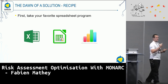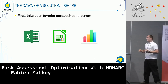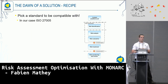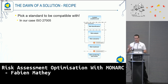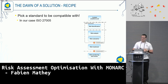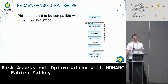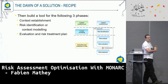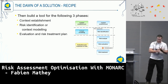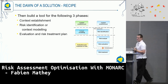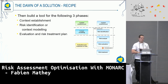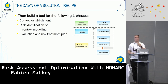Every respectable risk assessment tool has to start somewhere with a spreadsheet application. As a recipe, you start with a spreadsheet application. Next, you pick a standard — in our case, we chose ISO 27005 for ease. Then we went ahead and defined our three main phases: context establishment, risk identification, and the evaluation and risk treatment plan.